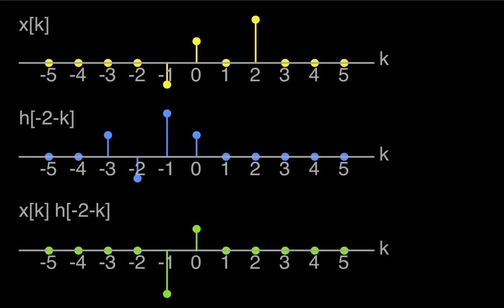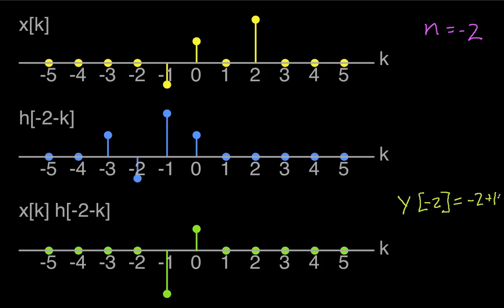For the case where n is negative 2, we have x of k and h of negative k shifted 2 to the left. Finding the product of each term: we get 0 times 1, 0 times minus 1 — so those are zero. The first nonzero product is negative 1 times 2 giving minus 2, then 1 times 1 giving 1, then zeros for everything else. So y of negative 2 is the sum of these two terms: negative 2 plus 1, which is negative 1.